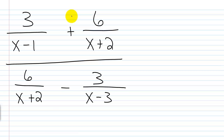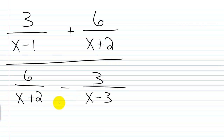So what would the LCD be for this problem right here? We have 3 over (x minus 1) plus 6 over (x plus 2), all over 6 over (x plus 2) minus 3 over (x minus 3).